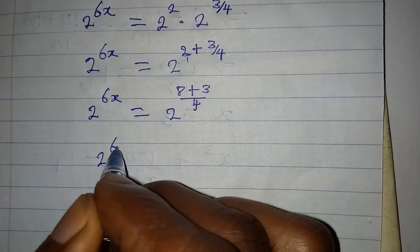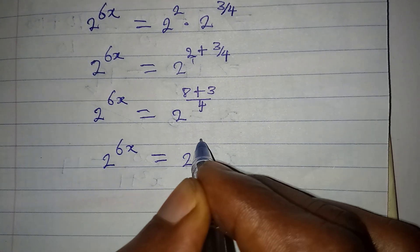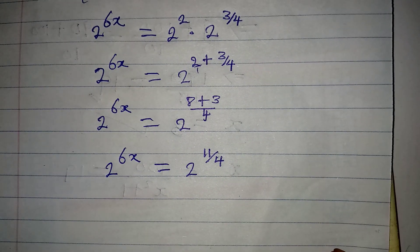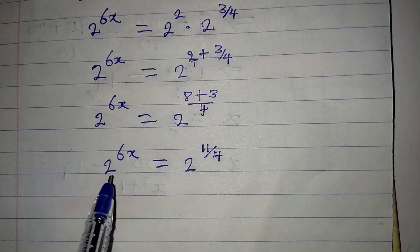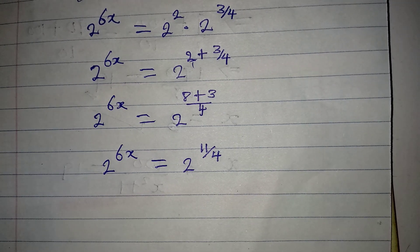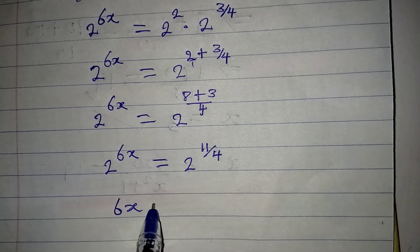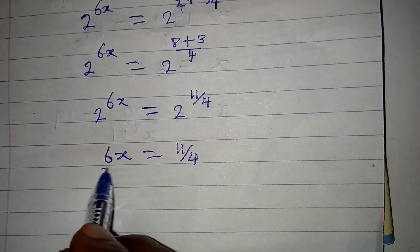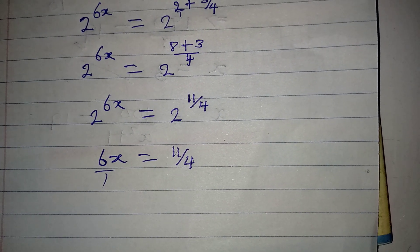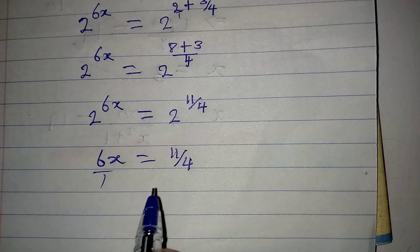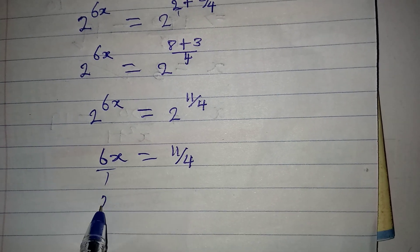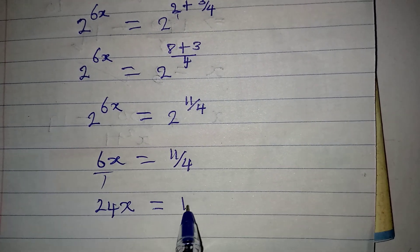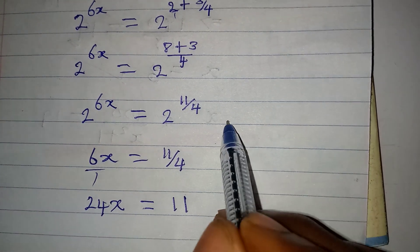We have 2 to the power of 6x equal to 2 to the power of 11 over 4. The bases are the same, so we can now work with the powers: 6x equals 11 over 4. This could be over 1, so we cross-multiply and get 4 times 6x, which is 24x, equal to 11 times 1, which is 11.